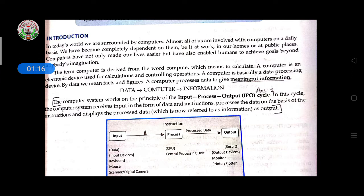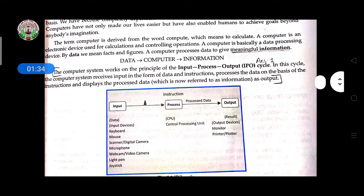Data processing device means data, which are facts and figures, gets processed and then after processing it gives meaningful information. So first we have to give data, then computer processes it to give information.